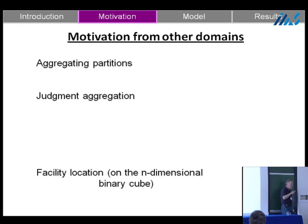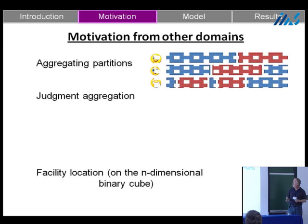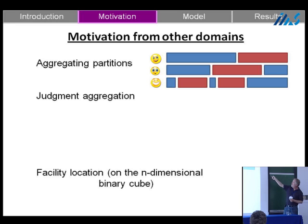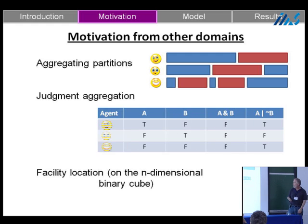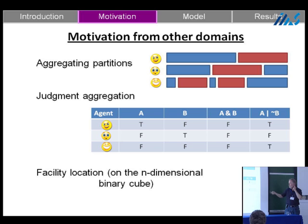Along the way we found direct connections to other problems. There's work by Ilan Nechama and others on aggregating partitions — agents reporting on partitions of a space and aggregating them by some rule such as majority. Judgment aggregation is also related, where different experts provide information and you want a group conclusion. Finally, facility location on an n-dimensional binary cube poses similar kinds of problems.